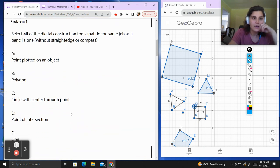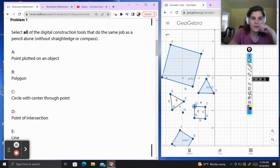Problem 1. Select all of the digital construction tools that do the same job as a pencil alone without a straight edge or compass. A: point plotted on an object. Yes, I can plot a point with a pencil. Polygon: A polygon is made up of straight lines and I can't make straight lines without a straight edge, so nope.